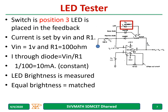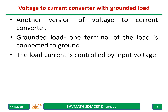In position three, an LED is connected. The current is set by the same Vin and R1, giving 10 milliamps. LED brightness is measured one by one — if the brightness values are equal, those LEDs are matched, and whether they are working or not can also be tested. Another version of the voltage to current converter is the grounded load configuration.